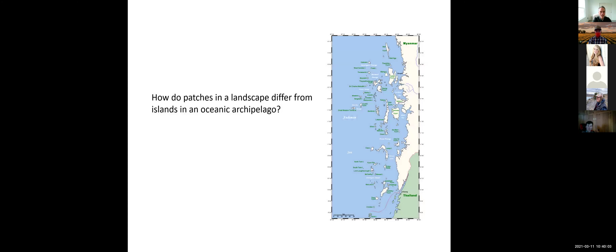Next, we'll look at patch distribution. One of the things we want to think about is how patches in the landscape differ from islands in an oceanic archipelago. This relates to Island Biogeography — the idea that patches are similar to islands in an oceanic environment, and that the movement of species between patches is similar to movement among islands in an aquatic environment, though they're not exactly the same.